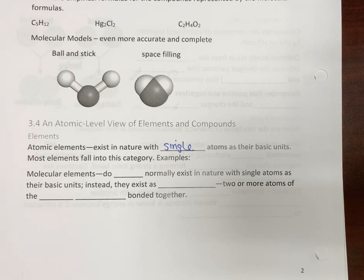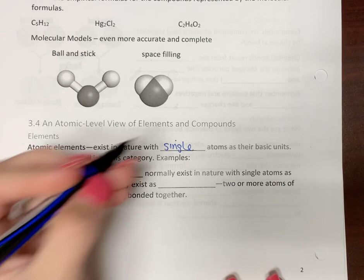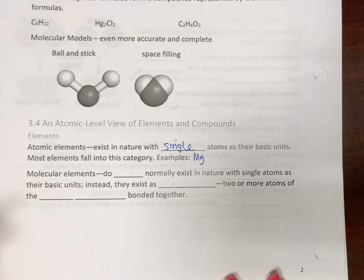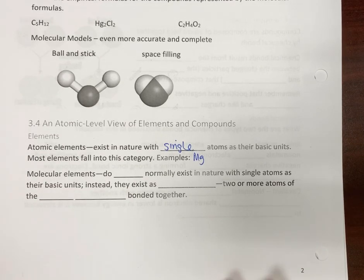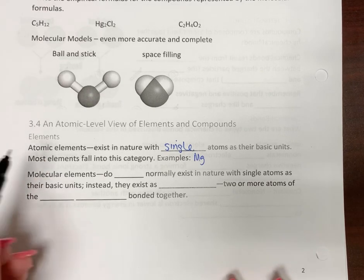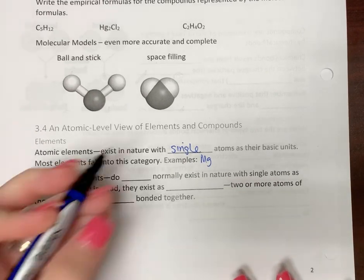For example, most of your metals, so like magnesium, is always found in nature as a single magnesium atom. So it would be an atomic element. So atomic here means one atom in nature.